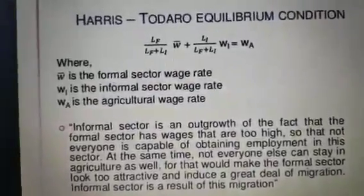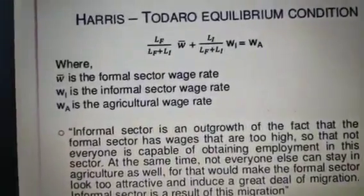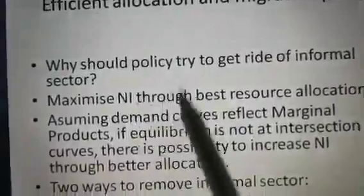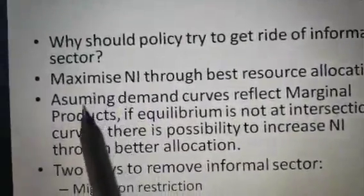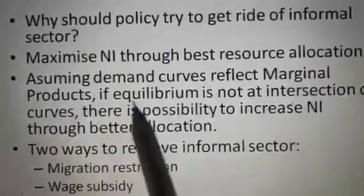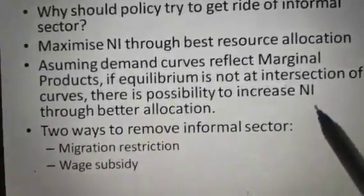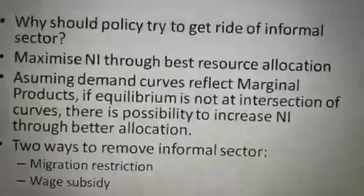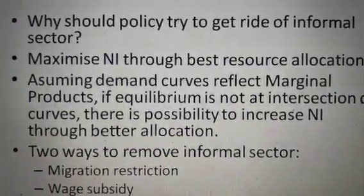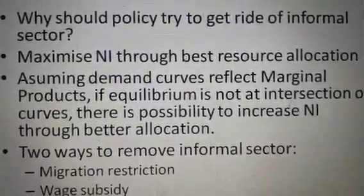In the case of COVID-19, because there is no protection and social security, there will be maximum reverse migration. This raises the question: why should policy try to get rid of the informal sector? The answer is to maximize national income through best resource allocation. Assuming demand curves reflect marginal products, if equilibrium is not at the intersection of the curves, there is a possibility to increase national income through better allocation. To achieve better allocation, you must provide better jobs to rural migrants and formalize their employment.